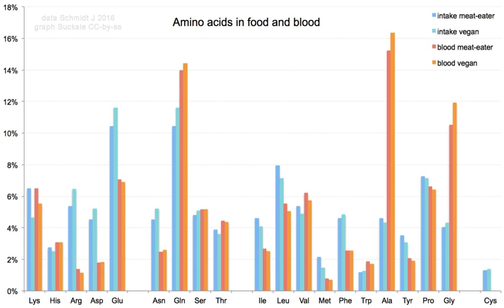As amino acids have both a primary amine group and a primary carboxyl group, these chemicals can undergo most of the reactions associated with these functional groups. These include nucleophilic addition, amide bond formation, and imine formation for the amine group, and esterification, amide bond formation, and decarboxylation for the carboxylic acid group.